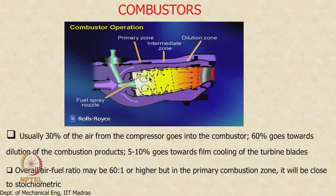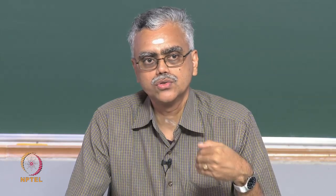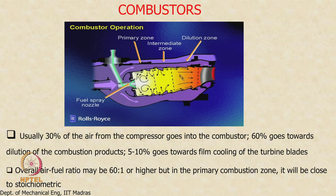The combustion chamber can be roughly divided into 3 parts. The primary zone is where the bulk of the combustion takes place. The intermediate zone allows combustion reactions to come to completion irrespective of the operating altitude. For example, at sea level the air density is higher, so combustion reactions proceed faster than at 35,000 feet where pressure is lower. The intermediate zone accommodates such variations.